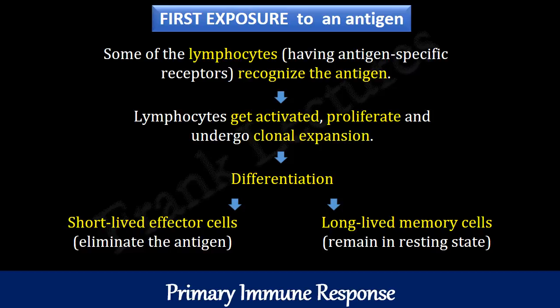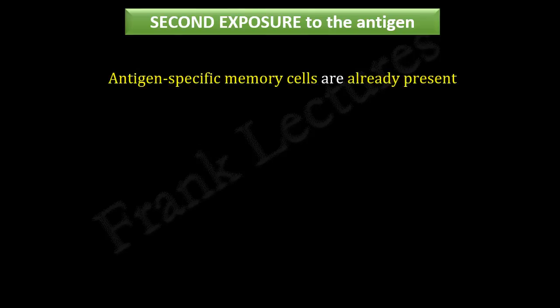This is known as the primary immune response. Now our immune system has acquired the ability to recognize and eliminate this antigen if encountered again in the future. When the same antigen invades the body for the second time, we know that memory cells specific to this antigen are already present in the body.